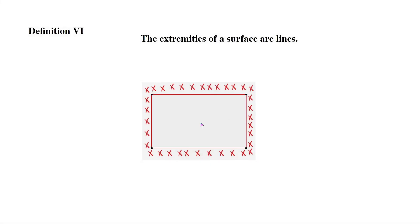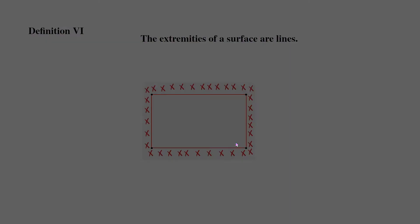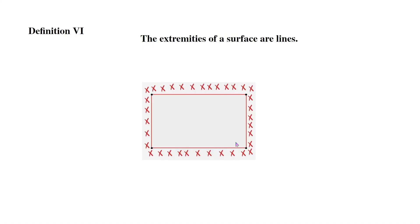Definition 6: The extremities of a surface are lines. So we reword this: the limits of a surface are lines. Now over here, you see the grayish surface we were talking about in slide 5. Now the boundaries of this figure are the red lines, the two lengths and the two widths.